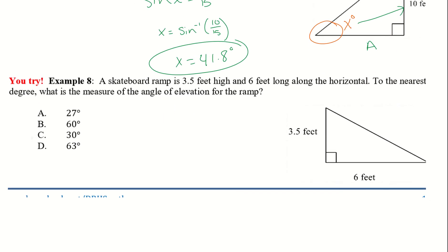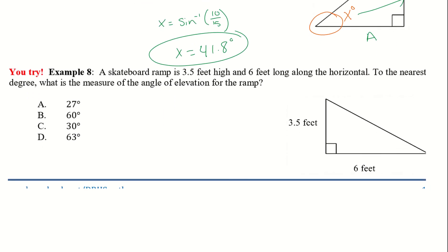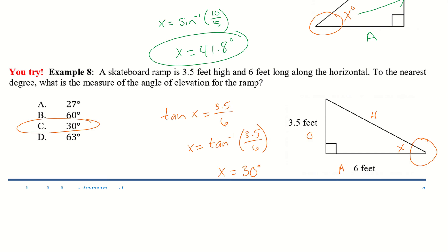Example 8: a skateboard ramp is 3.5 feet high and 6 feet long along the horizontal. To the nearest degree, what is the measure of the angle of elevation for the ramp? Pause the video and try it. And there's the work and the answer — rounding to the nearest degree it was close to 30 degrees, and we used the inverse of tangent.